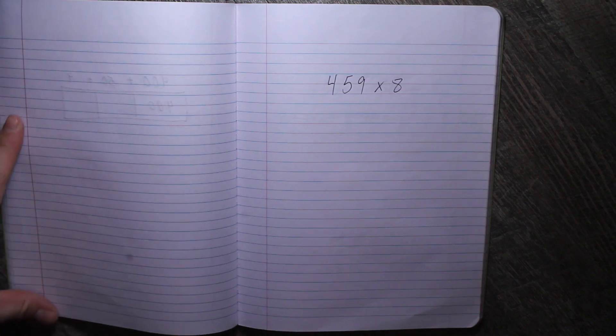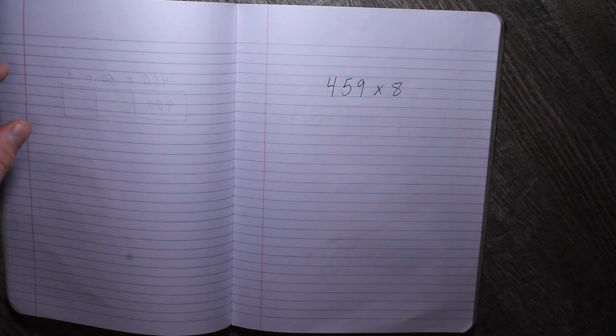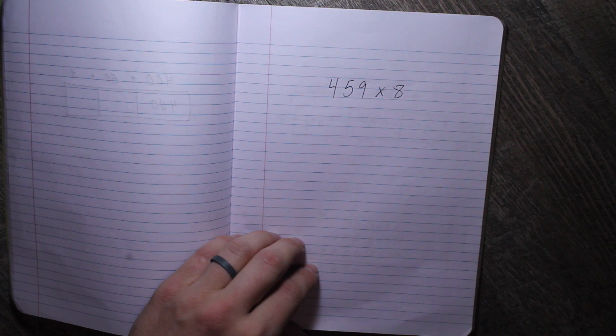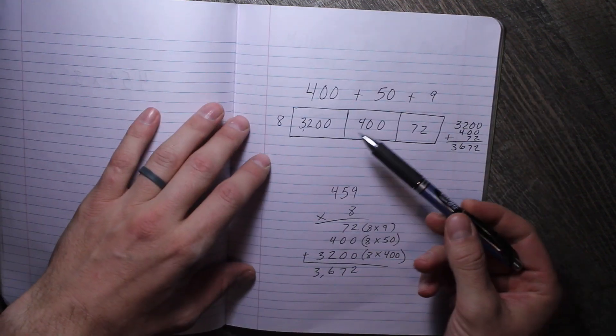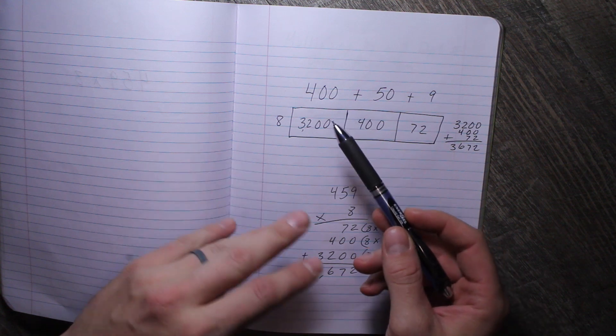Hey guys, today we're going to be talking about multiplying, mainly by a one-digit number. Now we're going to start with 459 times 8. Some of you are still using the box method, which you basically break the 459 and the 8 up by its place values.